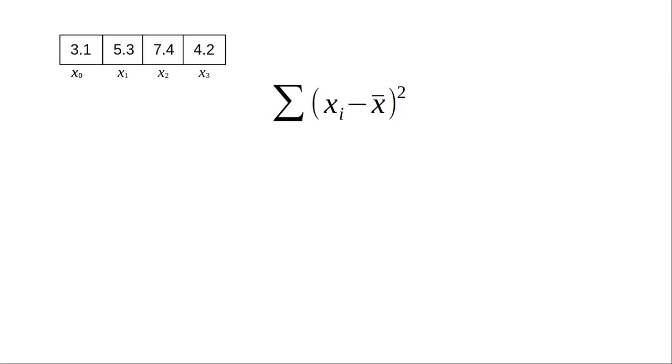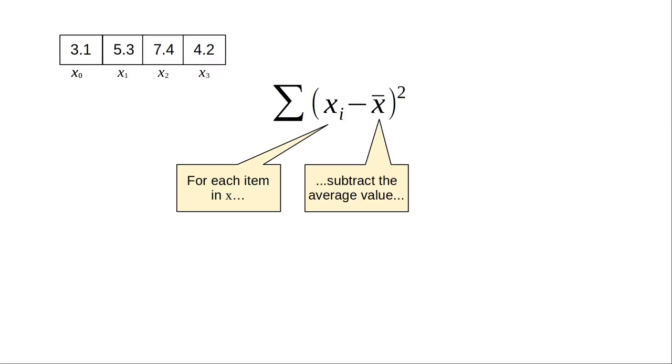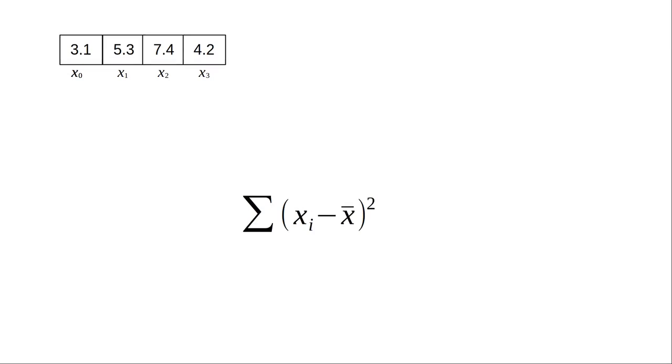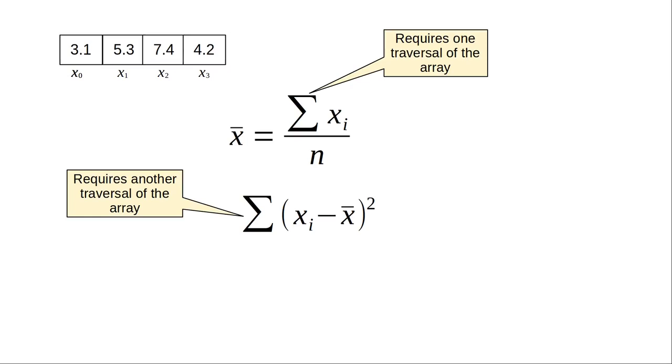X bar is used in other formulas, like this one. Let's analyze it piece by piece. For each item in x, subtract the average value, square that result, and add them all up. If you want to do this calculation in Java, you'll have to go through the array twice, once to find x bar, the average, and again to subtract the average from the items individually and square them.